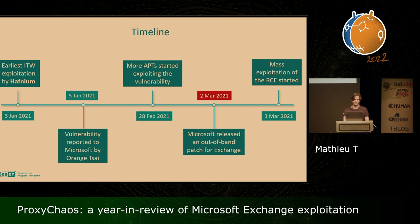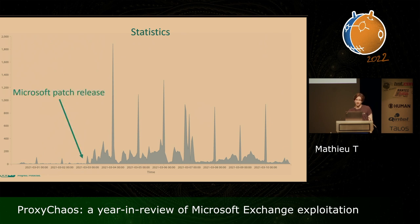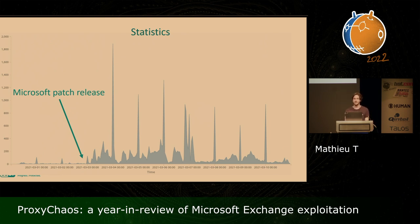We cannot know for sure. This graph represents ESET detections for the web shells that were dropped by the attacker during the exploitation of vulnerable Exchange servers. Before the patch release, the volume was quite limited and even null before February 28th. But just after the release of the patch, the number of exploitation attempts strongly increased, and it was pretty high during the next few days following the release of the patch.